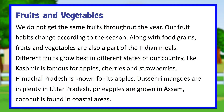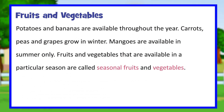Dussehri mangoes are in plenty in Uttar Pradesh. Pineapples are grown in Assam. Coconut is found in coastal areas. Potatoes and bananas are available throughout the year. Carrots, peas and grapes grow in winter. Mangoes are available in summer only. Fruits and vegetables that are available in a particular season are called seasonal fruits and vegetables.